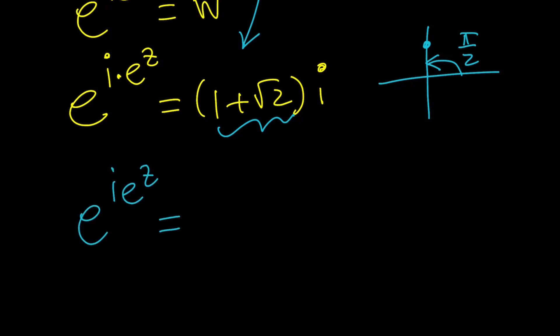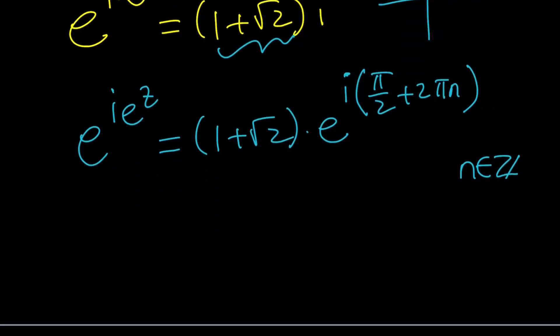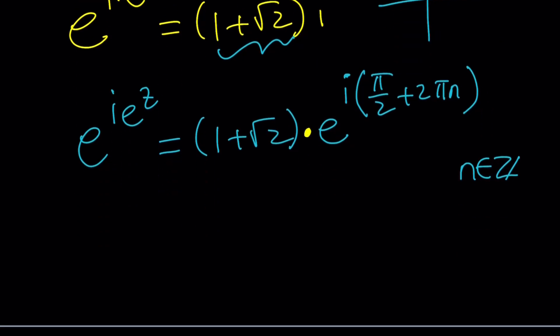The modulus of this number is 1 plus root 2, and I'm going to multiply it by e to the power i pi over 2. And of course, you're supposed to add multiples of something. So in general form, this can be written as e to the power i times pi over 2 plus 2 pi n, where n is an integer. I keep saying this all the time, but hopefully you recognize that as an integer. And now we have a really nice expression, we have a complex exponential, and then we have a real part, which is the modulus.